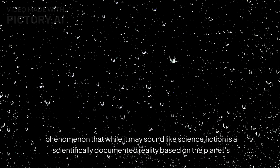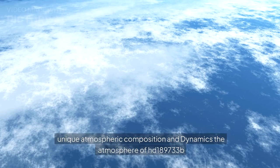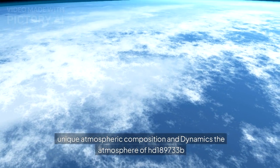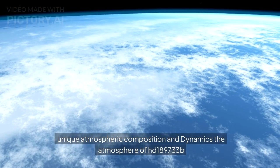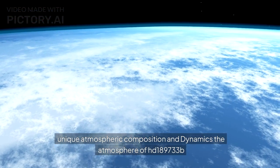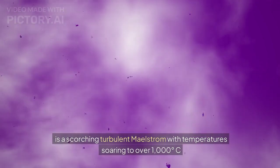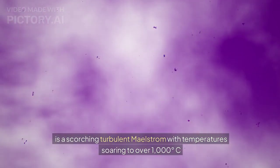The atmosphere of HD 189733b is a scorching turbulent maelstrom with temperatures soaring to over 1,000 degrees Celsius, 1,832 degrees Fahrenheit.